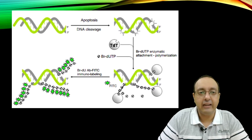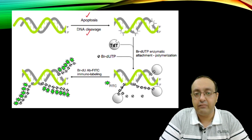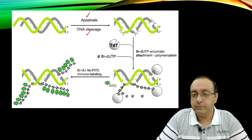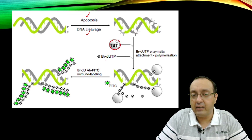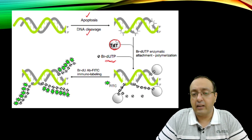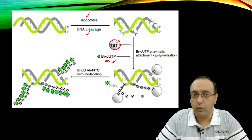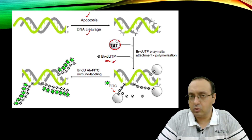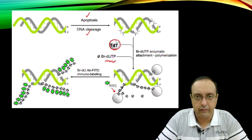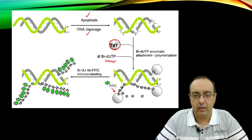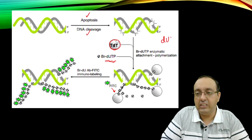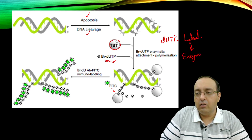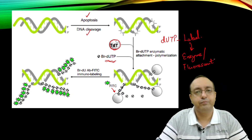Here is the schematic: apoptosis leads to DNA cleavage and DNA breaks. We add terminal transferase and BrdUTP — labeled UTP — which attaches to the three-prime ends and leads to polymerization. Fluorescent probes can then bind to these BrdUTP molecules. There are multiple methods: either alkaline phosphatase or BrdUTP, but the idea is still based on dUTP with some sort of label, and then using an enzyme or fluorescent molecule to detect where it is happening.